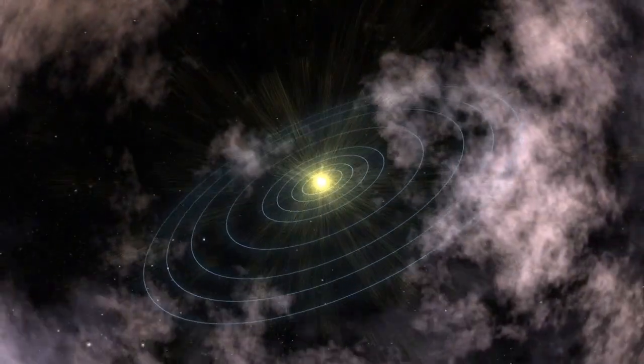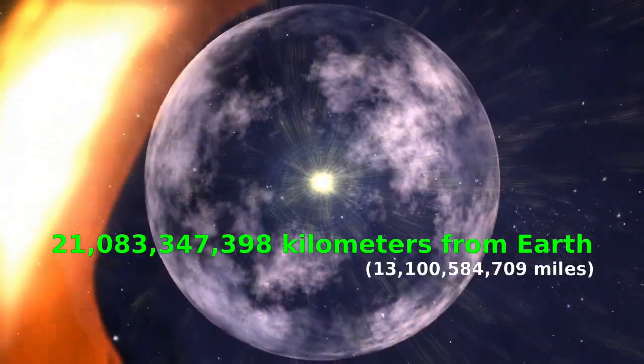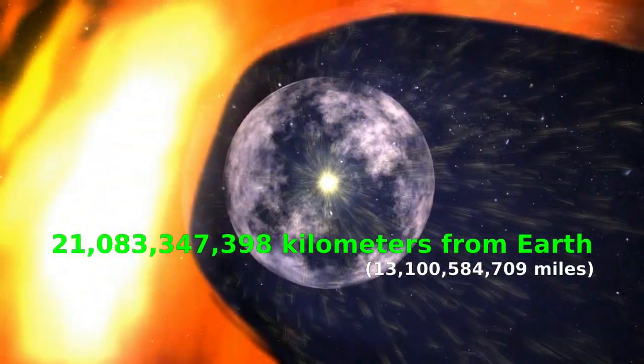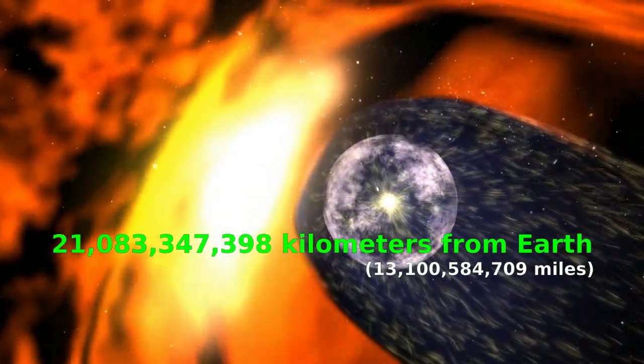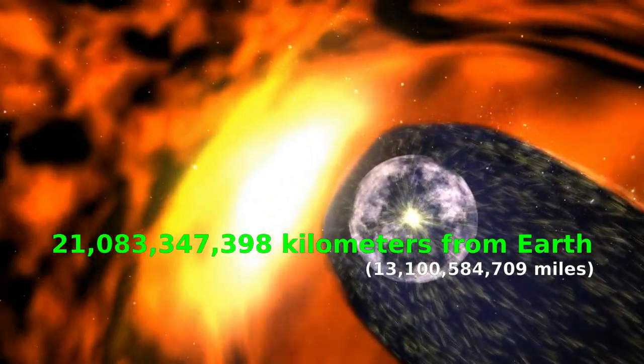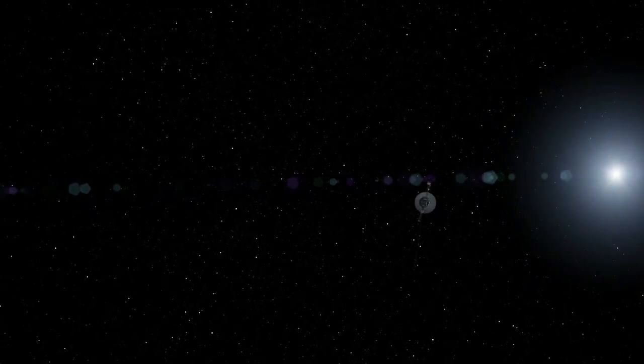As I'm recording this, Voyager 1 is 21,083,347,398 kilometers from the Earth. For the purposes of this video, let's assume that Voyager 1 stops suddenly right where it is in space. Then, let's have a look at how that kind of distance compares to some other things that we consider to be pretty fast.